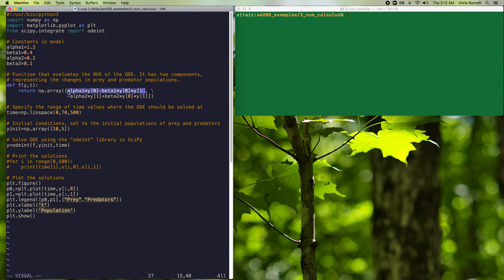And it will then return the changes in the two populations. So in this part, we're defining the change in the prey population. We have exponential growth in the prey.